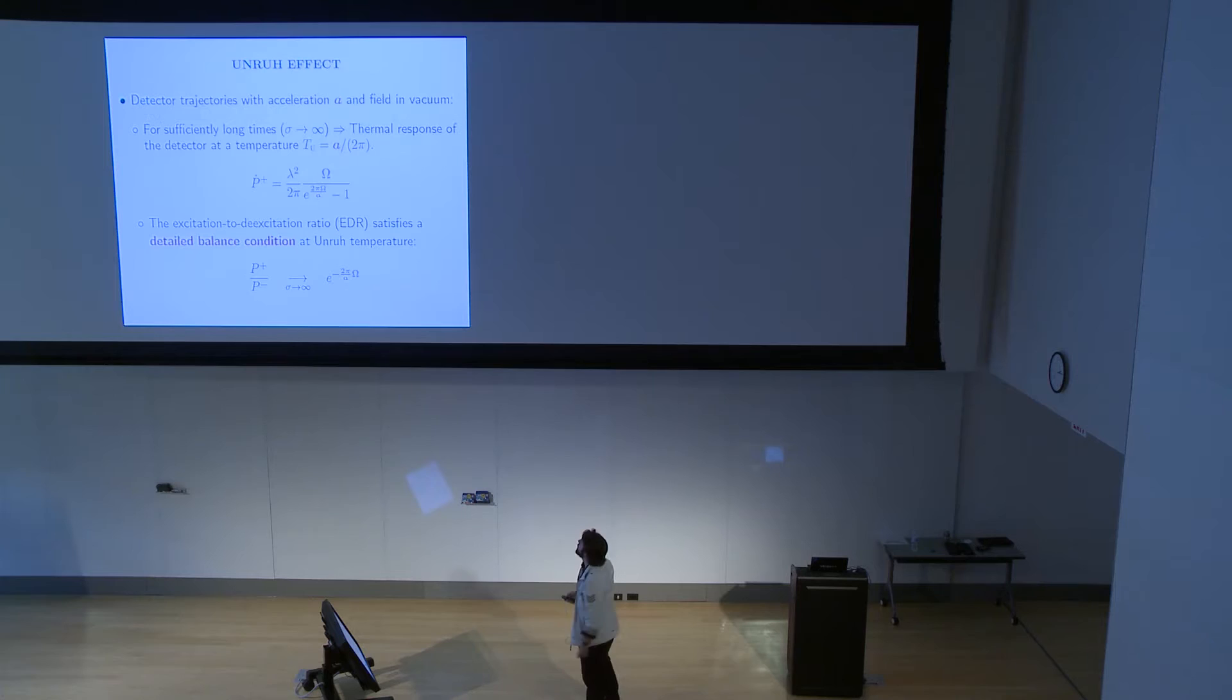So with this model, we reproduce the Unruh effect. We got detectors with an accelerated trajectory, uniformly accelerated trajectory. And at the vacuum, for substantially long times, this is sigma tending to infinity.